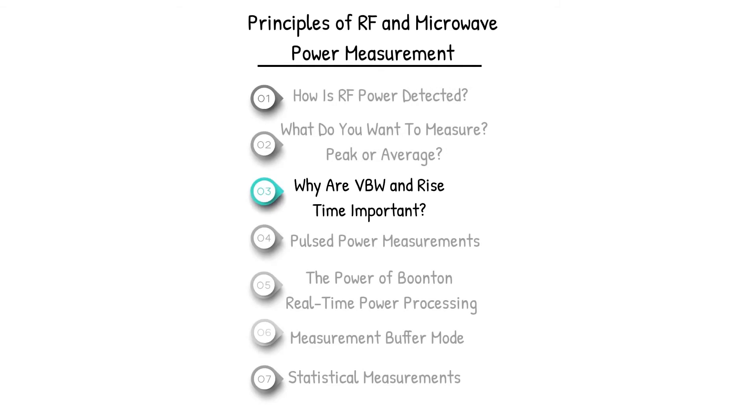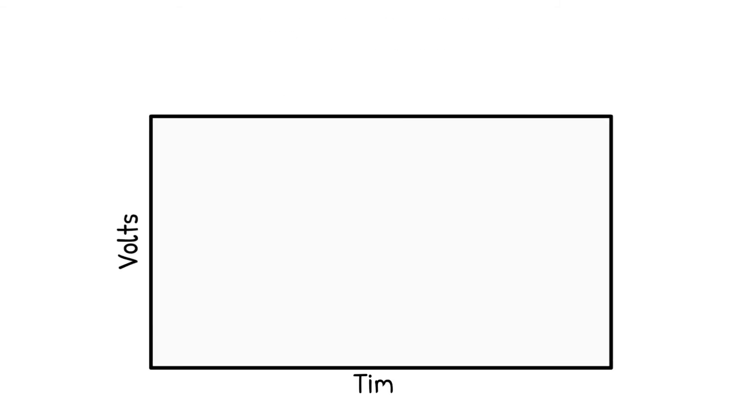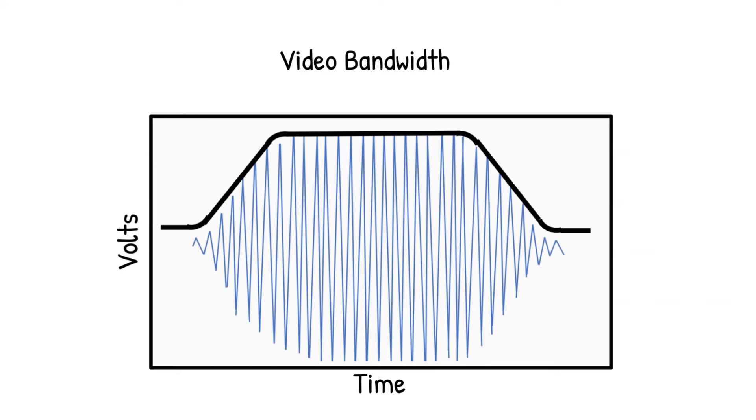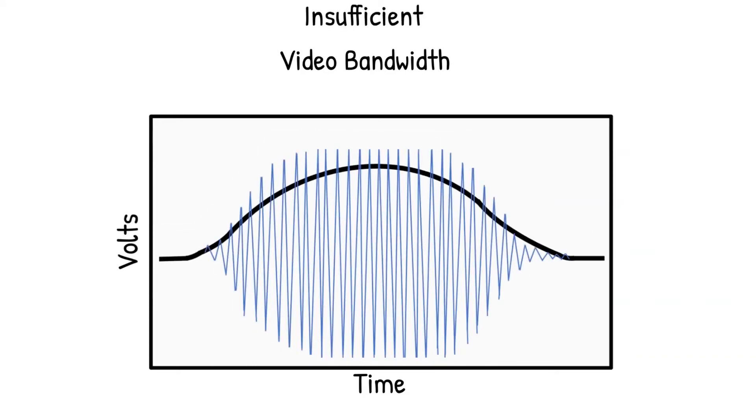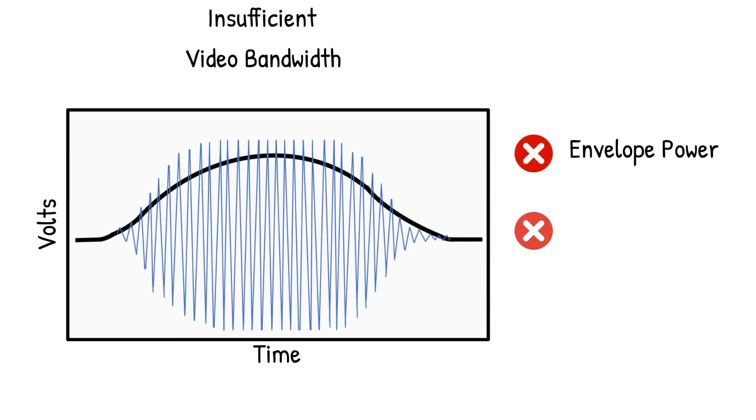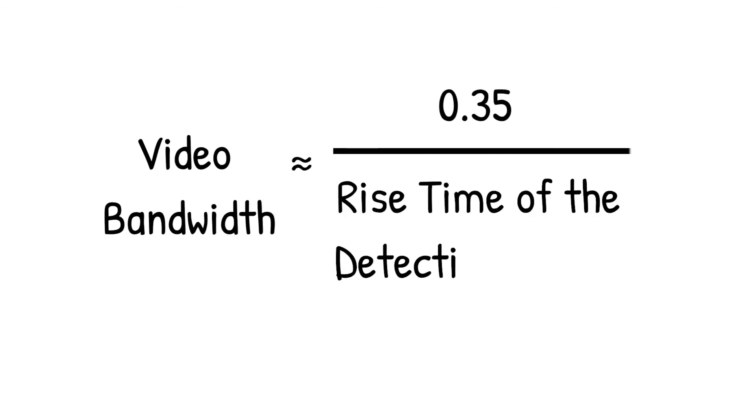Video bandwidth describes a sensor's ability to track envelope power. An instrument with insufficient video bandwidth will negatively affect the accuracy of envelope power, peak envelope power, and average power. And video bandwidth and rise time are inversely proportional.